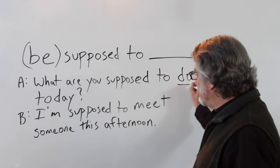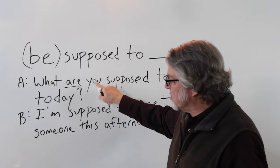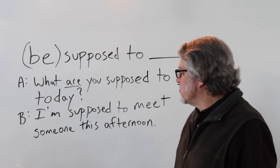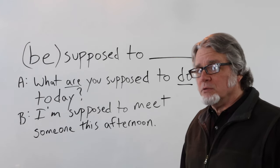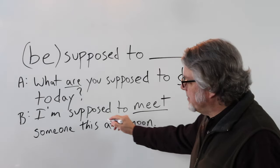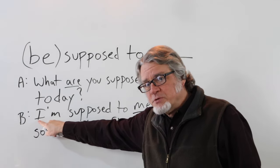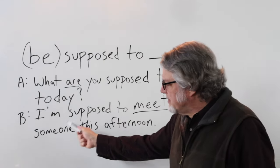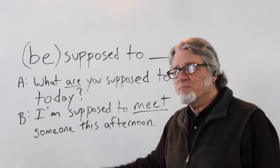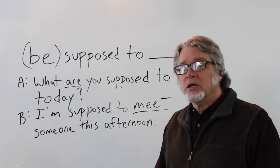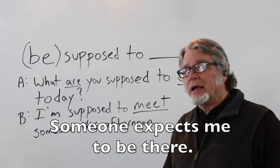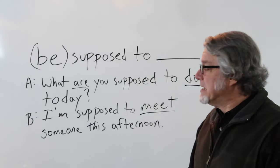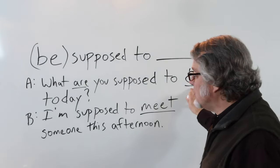The main verb follows 'supposed to,' and the verb 'be' changes according to the subject. For example: 'I'm supposed to meet someone this afternoon.' Here 'be' changes because the subject is 'I.' The verb 'do' is regularly found in questions like: 'What are you supposed to do?'